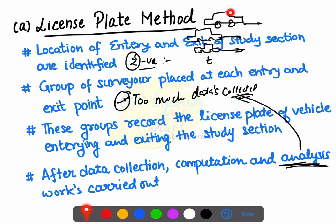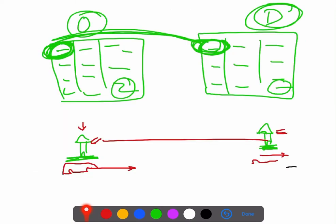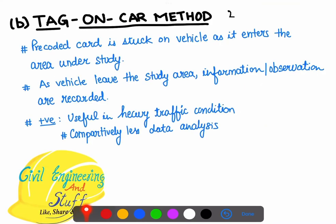To ease out the recording of vehicles, the next method adopted is the tag on car method. In the tag on car method, the approach is similar to the license plate method, but instead of recording the license plate, we put a tag on the car.